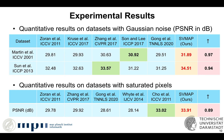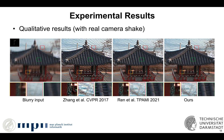We evaluate our approach on images with simulated Gaussian noise and saturated pixels, where our method outperforms competing approaches by a wide margin across different datasets. We further evaluate on images with real camera shake, where our method generates much clearer images.